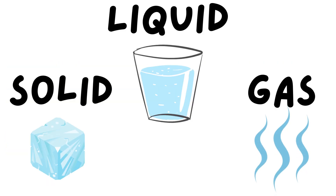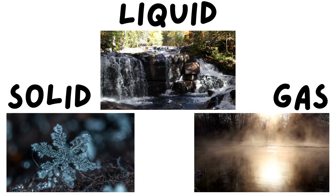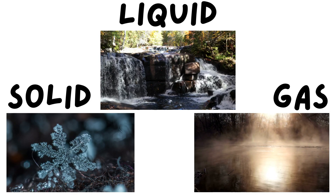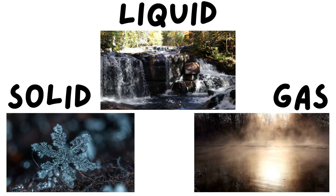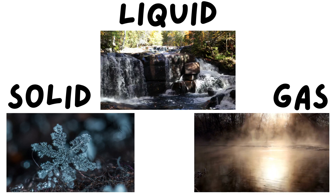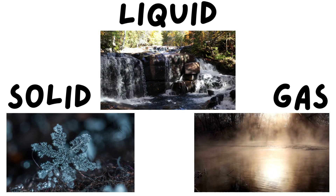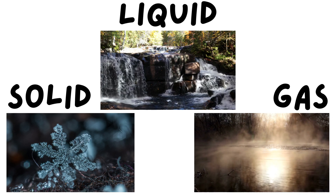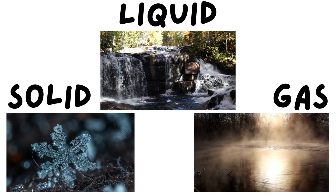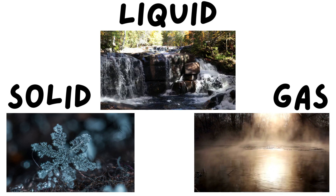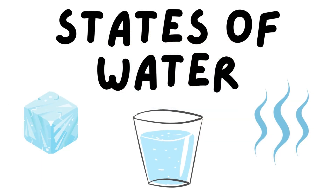We now know that the three states of matter are solid, liquid, and gas, and that water can take the form of all three: solid water, liquid water, or water as a gas. Thanks for exploring the three states of water.